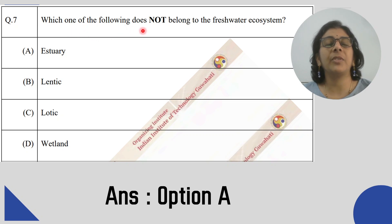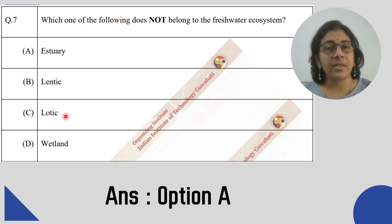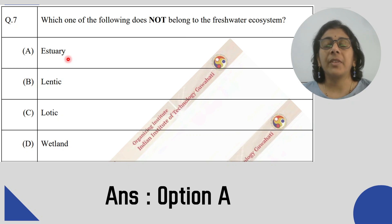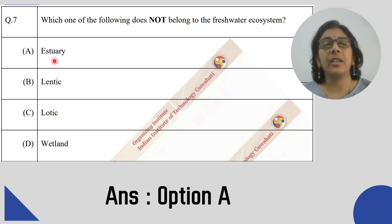Now, we have been asked which one of the following does not belong to the fresh water ecosystem. We have seen that Lotic and Lentic are clearly fresh water ecosystems. Wetland can be fresh water or marine water. But Estuary — the ocean water is always mixed there — so it cannot be classified as a fresh water ecosystem. Therefore, option A, Estuary, is the best answer.